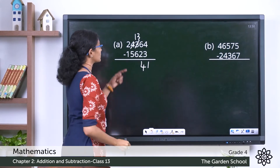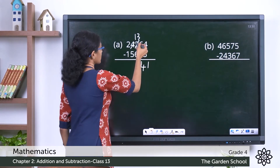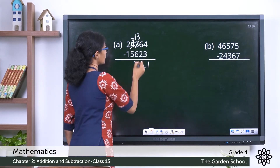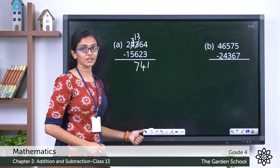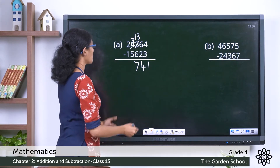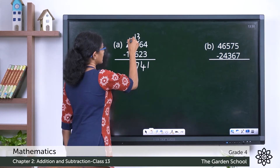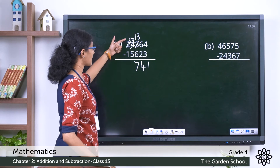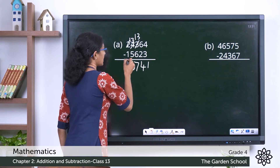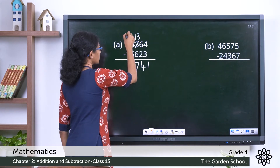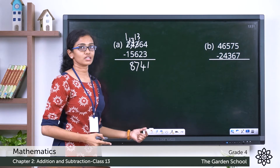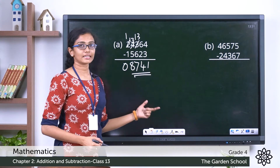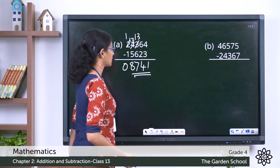In the hundreds place we now have thirteen instead of three. Thirteen minus six is seven. Now in the thousands place, the four was changed to three. Three minus five — we cannot do that, so we borrow one ten-thousand from the ten-thousands place and give it to the thousands place. Thousands place: thirteen minus five equals eight. In the ten-thousands place the two was changed to one, so one minus one is zero. The difference is 8,741.